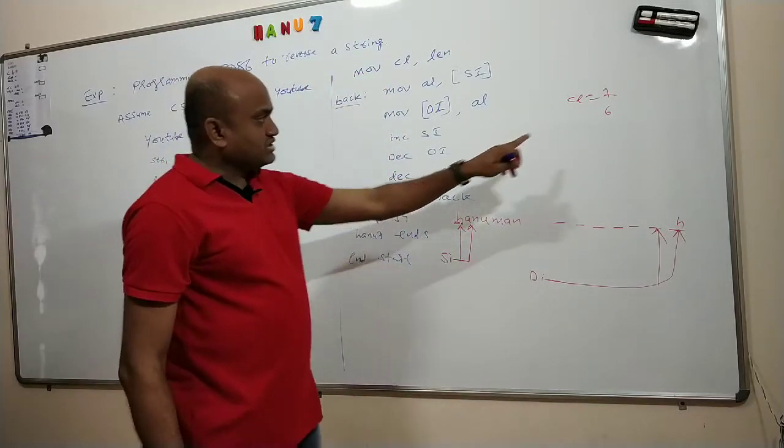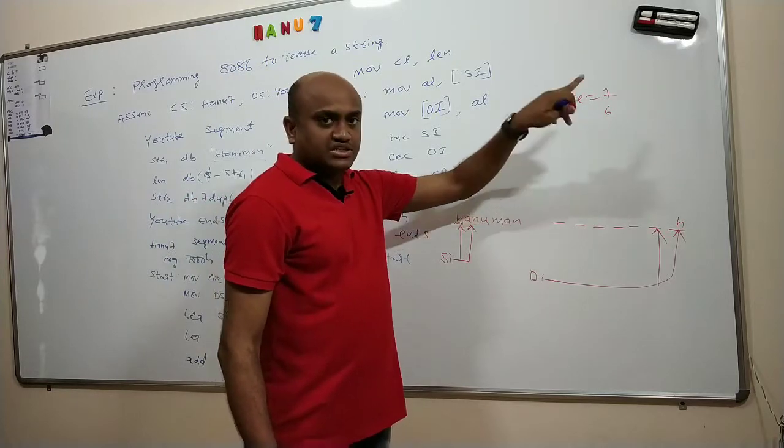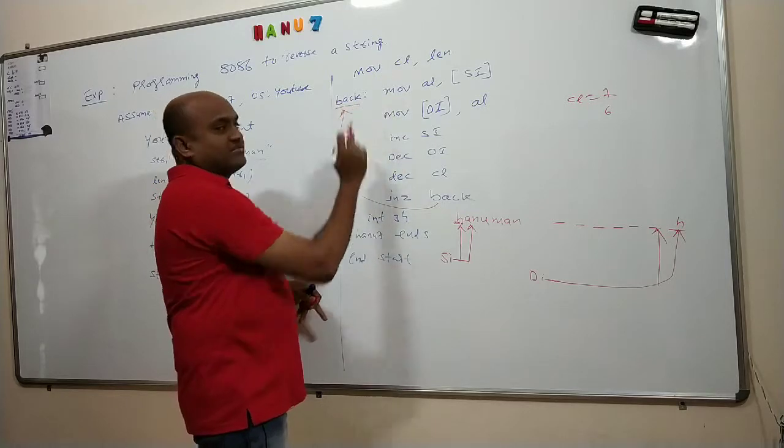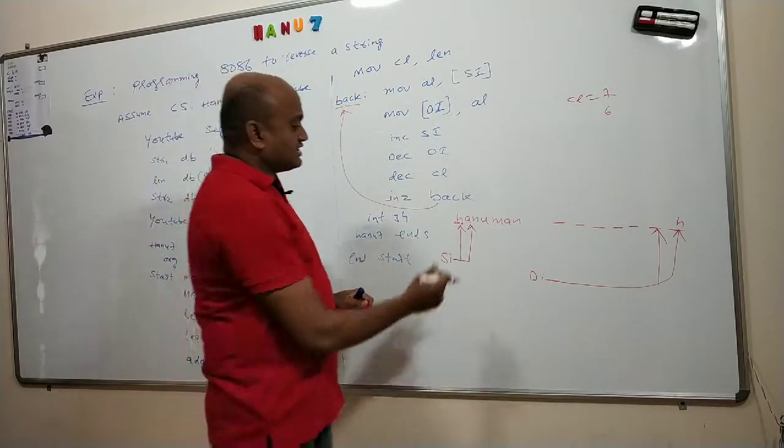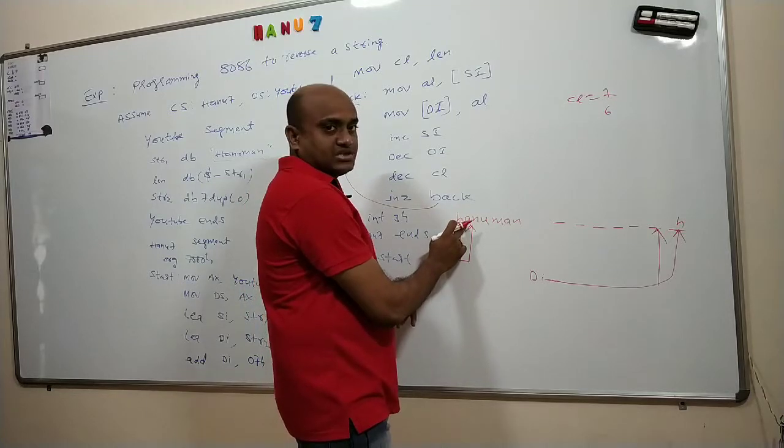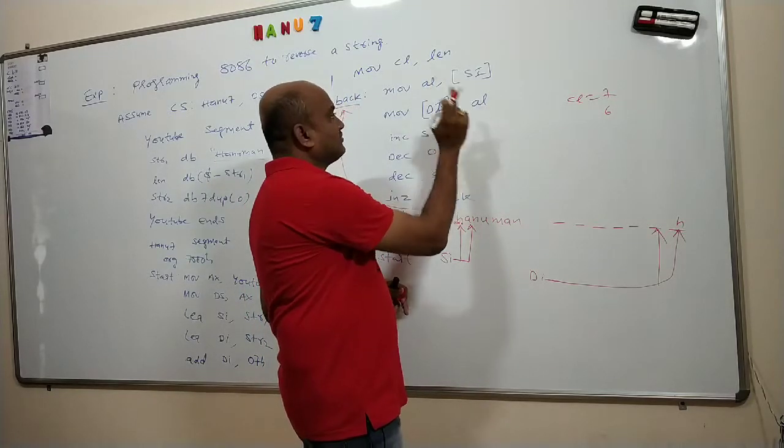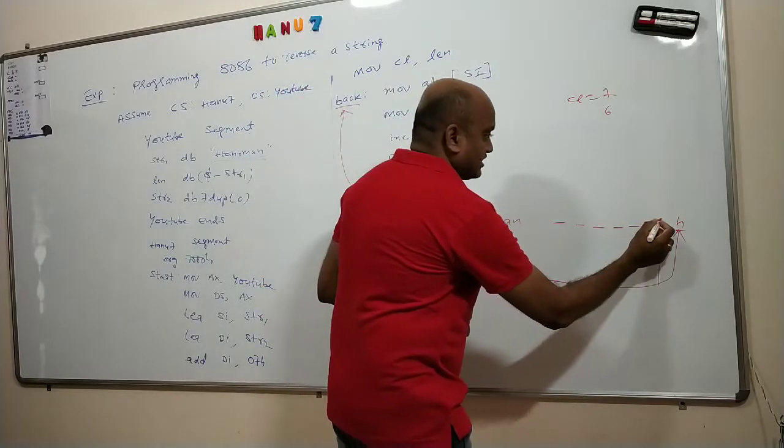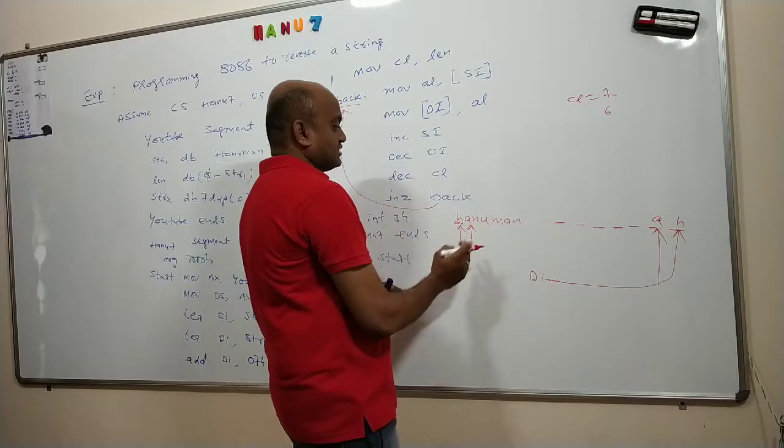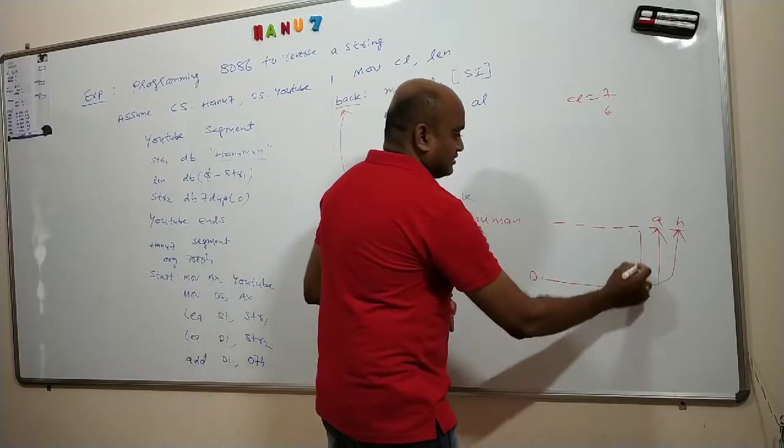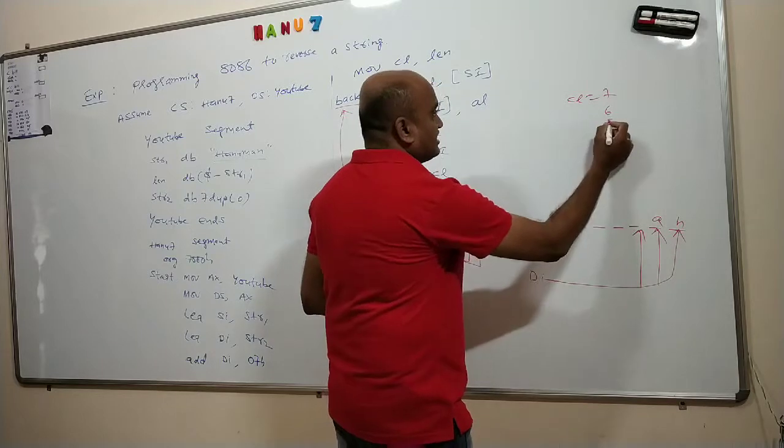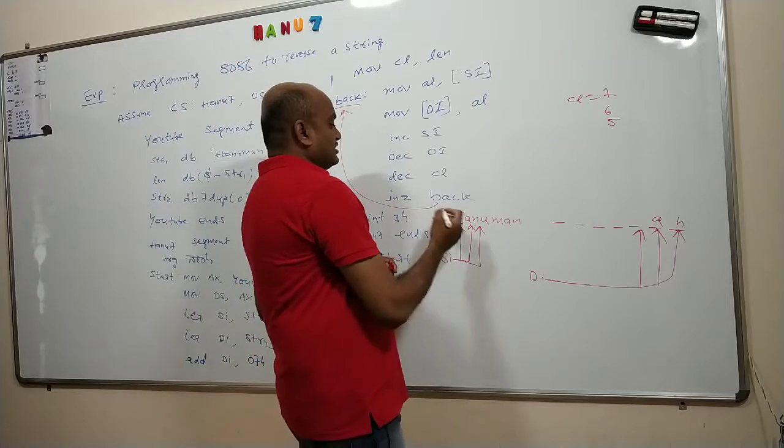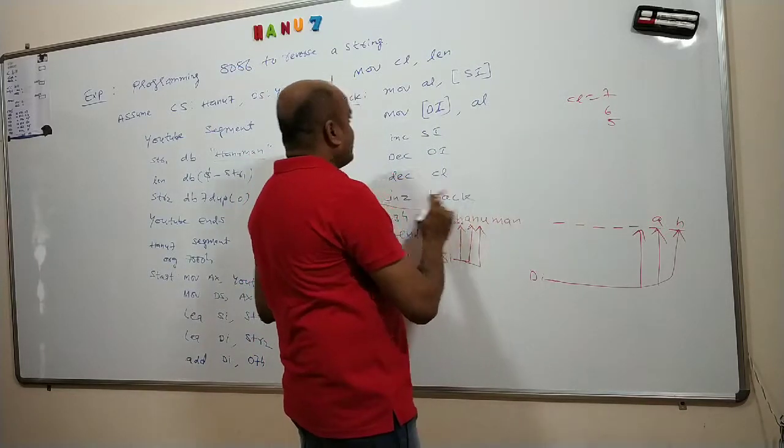Jump if not zero. If there is no zero, go to back. In the back what is there? Move AL, content of SI. Now this time we have A, so A will be copied into AL and A from AL will be copied into DI. So I will get A. Same process: increment SI, decrement DI, and decrement this value of CL. It will become 5 now. So jump if not zero. There is no zero, go back.